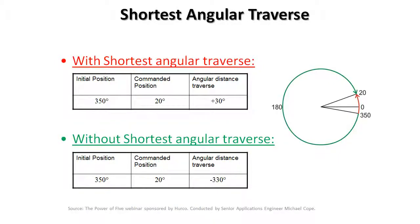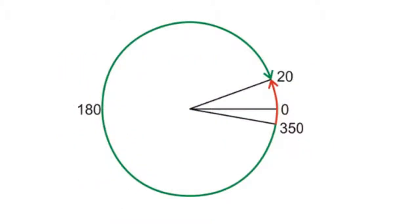Shortest Angular Traverse is just as it says — the control is going to take the shortest distance from point A to point B. In the image shown here, if I'm using Shortest Angular Traverse, I'm going to go from an initial position of 350 degrees to a commanded position of 20 degrees. Using SAT, I can go one short move of positive 30 degrees.